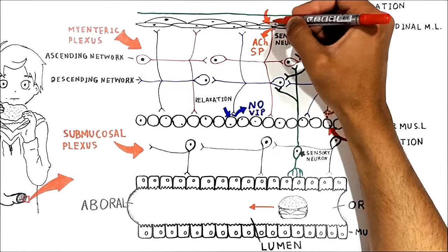As for the parasympathetic nervous system, it is responsible for rest and digest. When you eat a meal, the parasympathetic nervous system is activated and dominates over the sympathetic nervous system, stimulating both plexuses and causing increased peristalsis, blood flow, absorption, and local secretion in the mucosa.